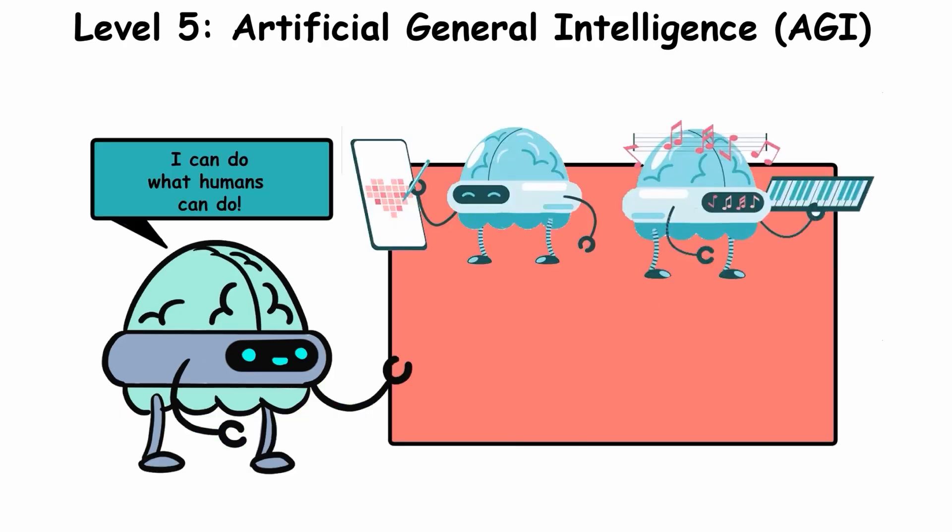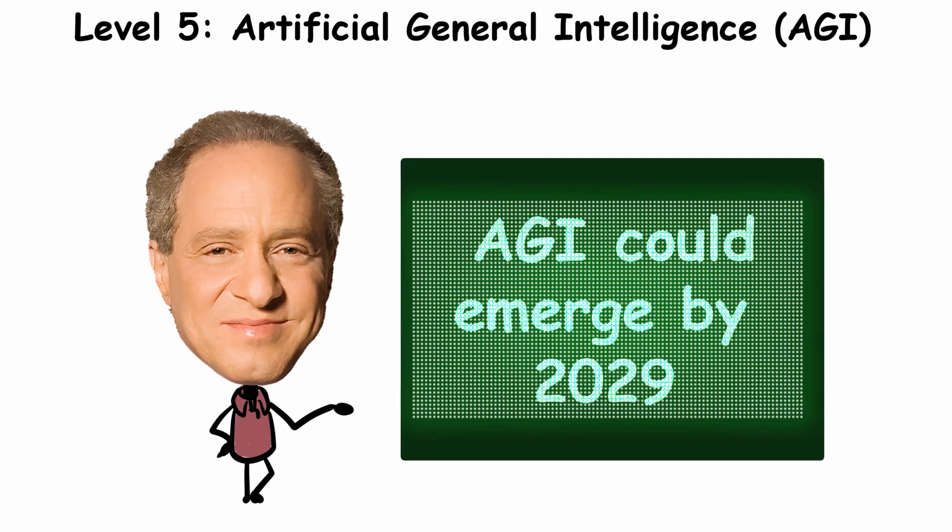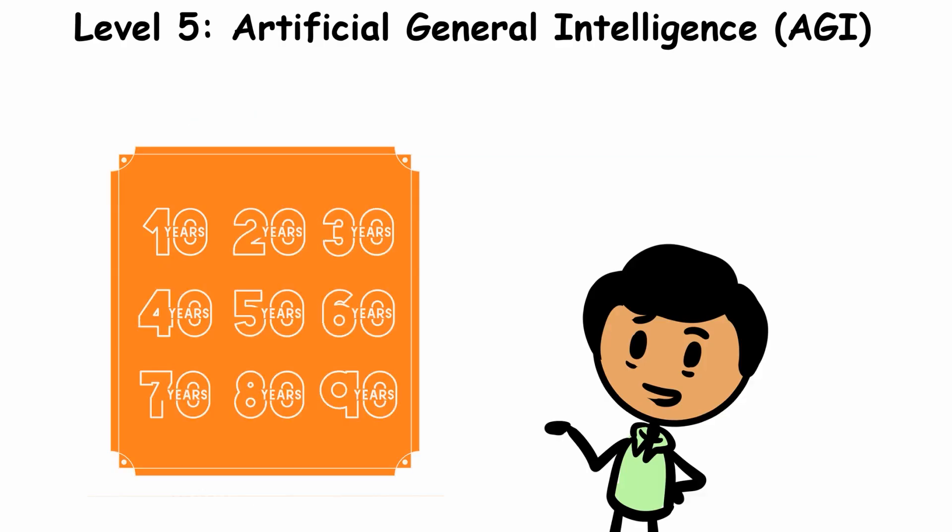AGI is capable of understanding, learning, and applying knowledge across different domains. AI pioneers like Ray Kurzweil predict AGI could emerge by 2029, while others believe we're still decades away.